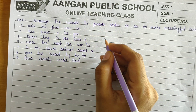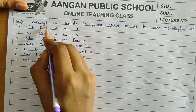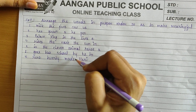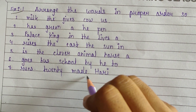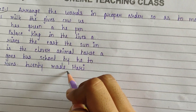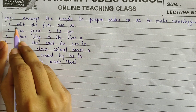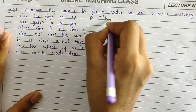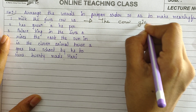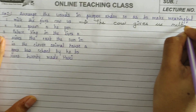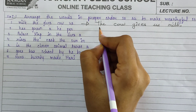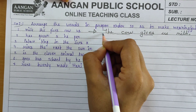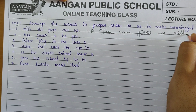Here are some exercises. Exercise one: arrange the words in proper order to make a meaningful sentence — unjumble the words. Like the first one: 'milk the gives cow us' — the correct sentence is: 'The cow gives us milk.' In this sentence, 'the cow' is the subject and 'gives' is the verb. The first letter is capital and we put a full stop at the end.